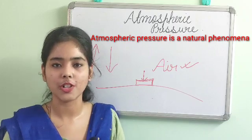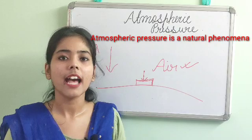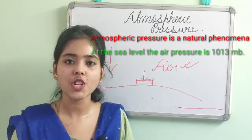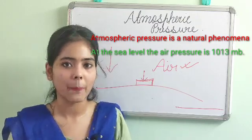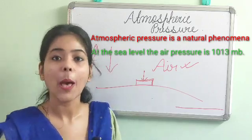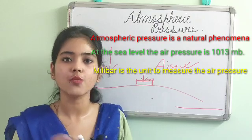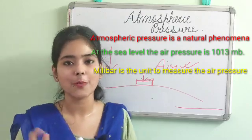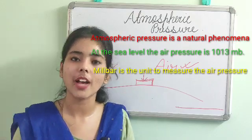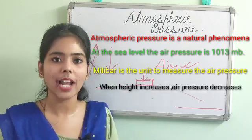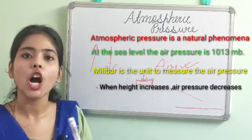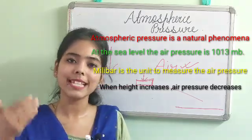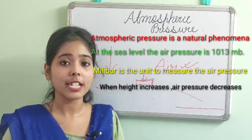Atmospheric pressure is a natural phenomenon, and at the sea level the atmospheric pressure is 1013 millibar. Millibar is one type of unit which is generally used to measure atmospheric pressure. Another important fact is when we go up — like traveling to a mountain — the atmospheric pressure will be decreased. So with altitude, atmospheric pressure has an inverse relationship.